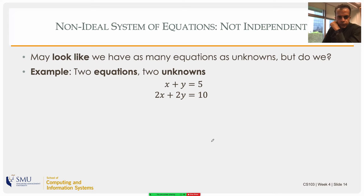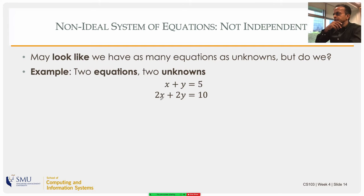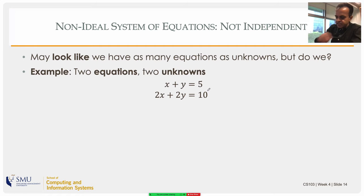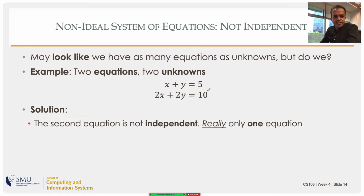Now let's look at another situation: two equations and two unknowns — can you solve them? It might look like you have two equations, but the second equation is just the first equation times two. There is no more information; it's the same equation essentially. So you really have only one equation, the same as the previous case.